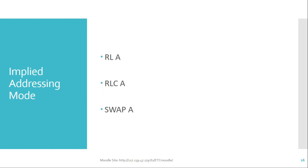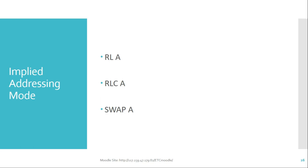Finally, we have implied addressing mode. In this mode, the operand is implied — only the accumulator can be used as the operand; no other register is allowed. Examples include RL A, which rotates the accumulator value left; RLC A, which rotates the accumulator left through carry; and SWAP A. All these instructions use only the accumulator as the operand, which is why they belong to implied addressing mode.